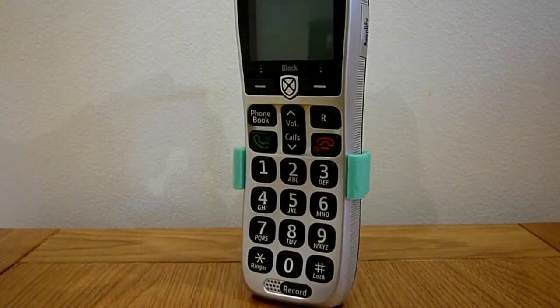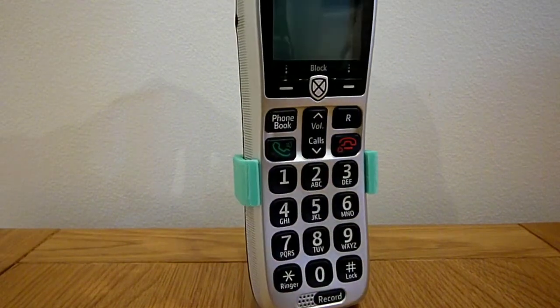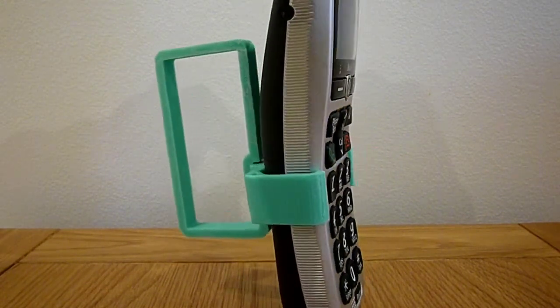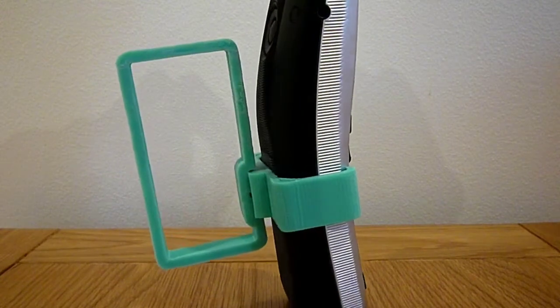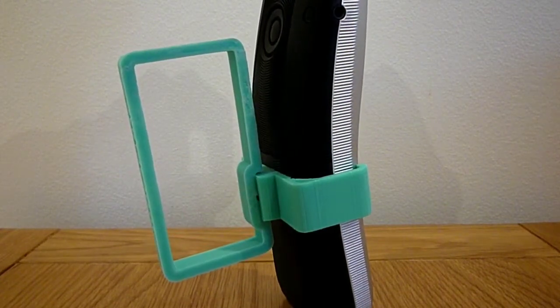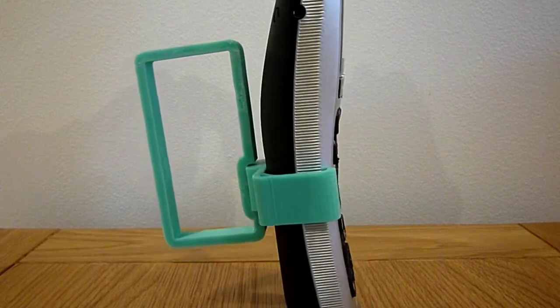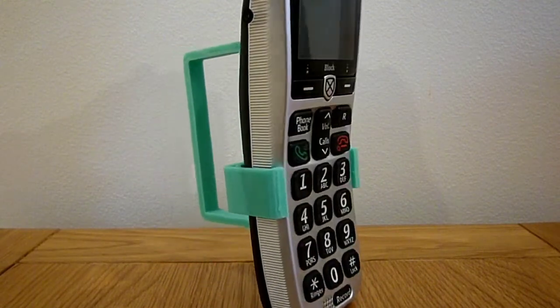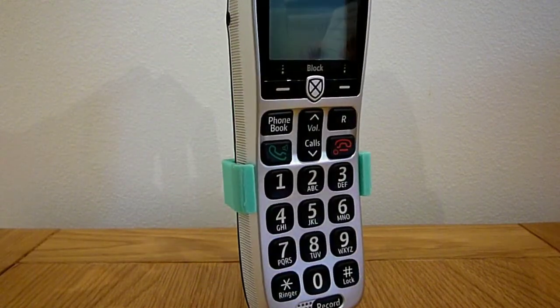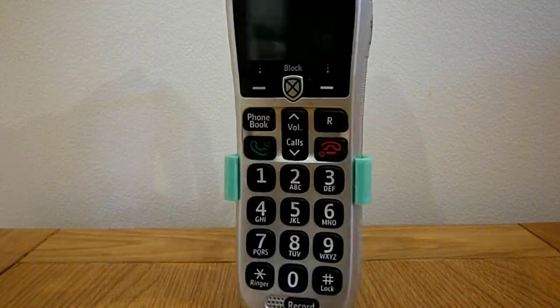All of our designs for 3D printable accessibility aids are available to download for free from the Enabled Me website. Please see links in the description below. Enabled Me provides bespoke accessibility aid design and 3D printing services.